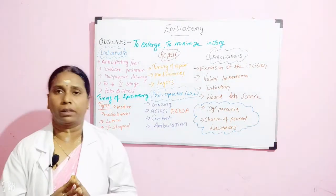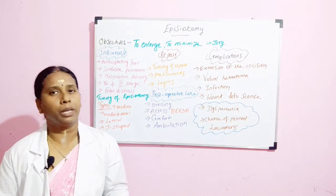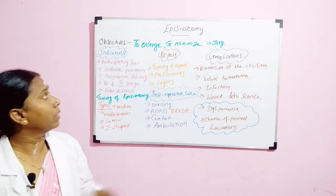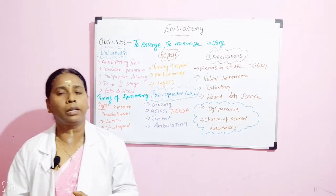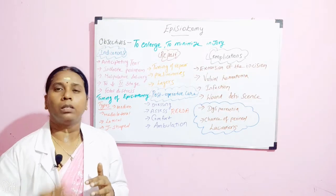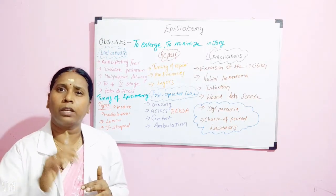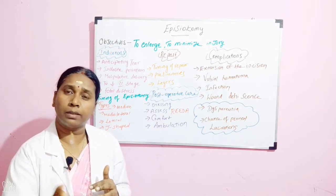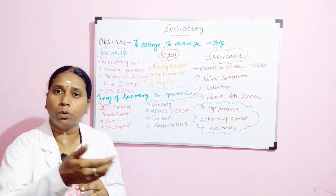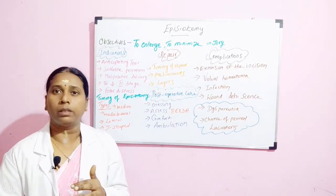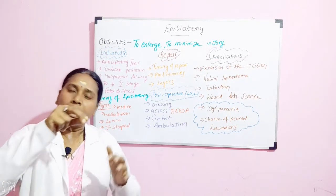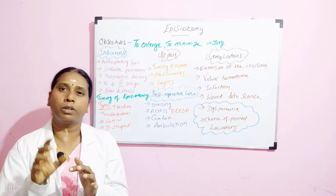After the incision and delivery of the baby, the next step is repairing the wound. The repair takes place once delivery is over — the baby is taken out, the placenta is removed, and you clean everything. You place your hand inside the uterus to check for any clots, bits, or membranes and clear everything out.